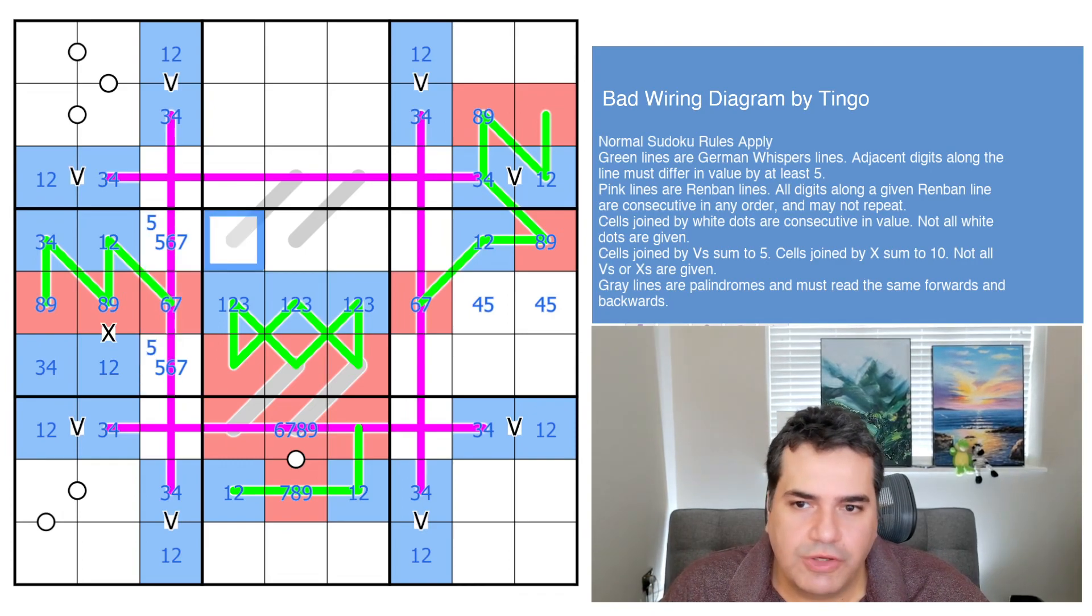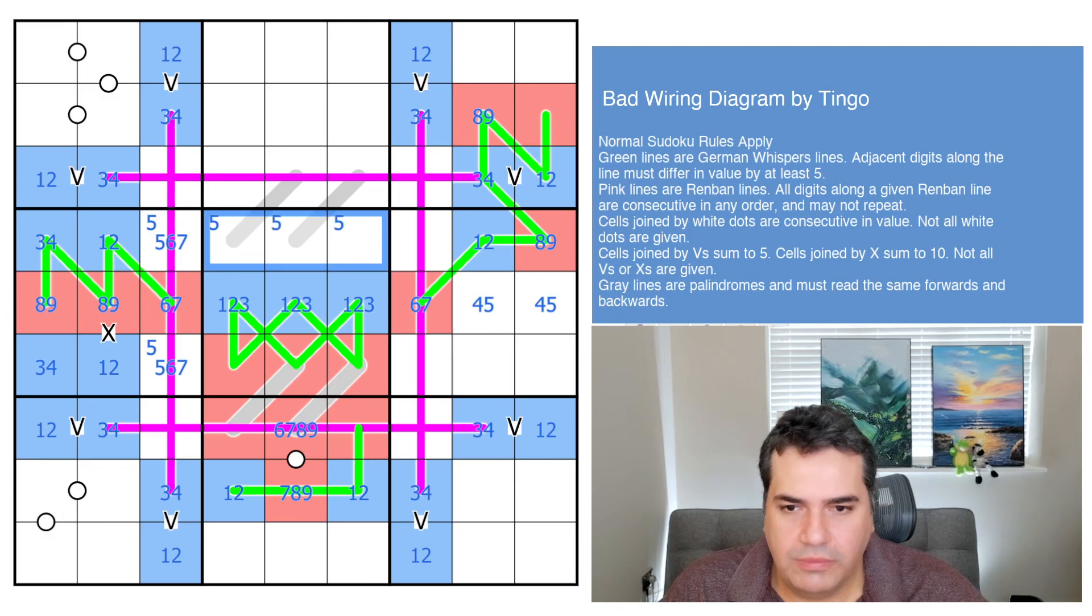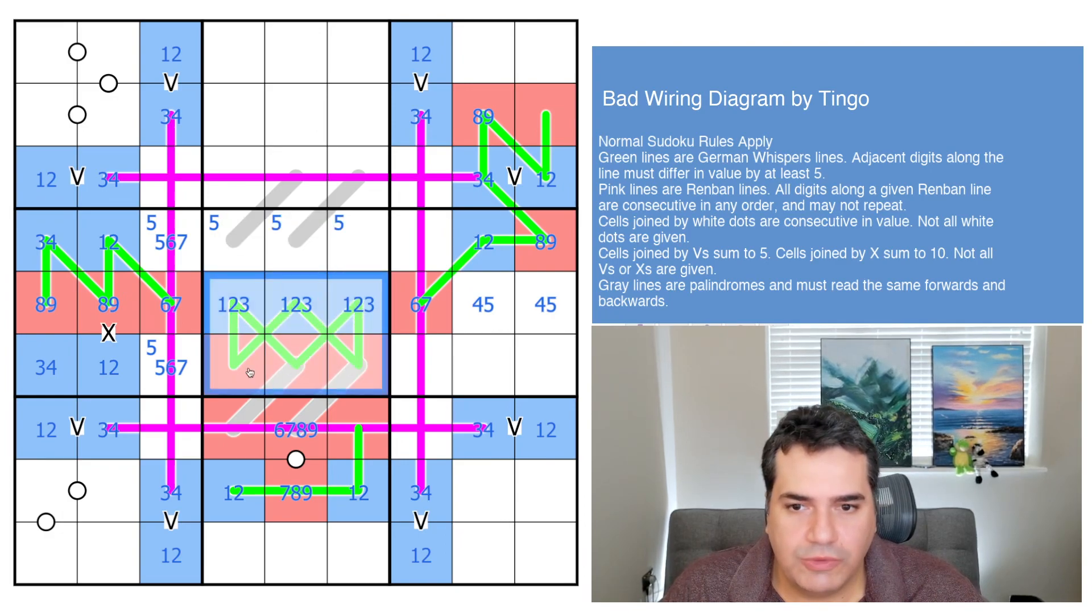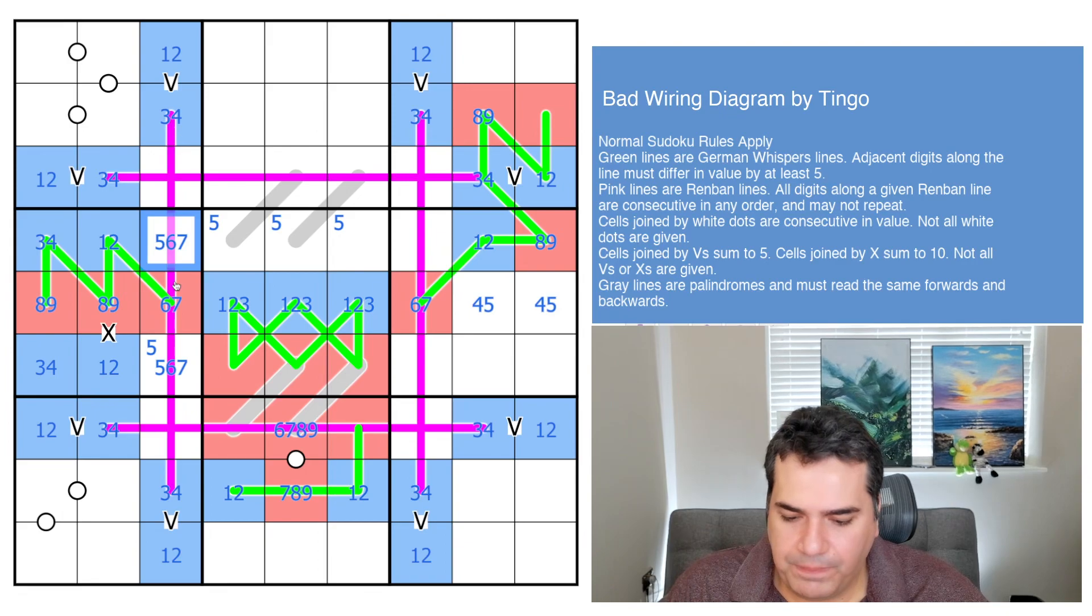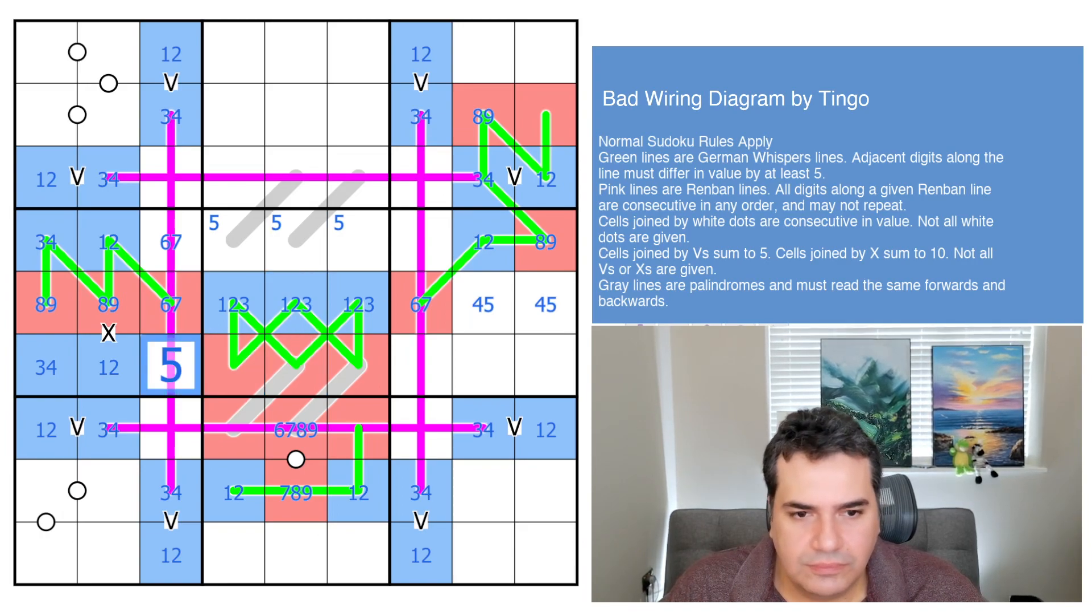Three, four cannot go in this box. So that's the remaining three, four. And now we have one of five, six, or seven. That's the five. Right. Fairly obvious. The five has to go in here, because it's not going to go in a German Whisper's line. So that's not five. That is the five. And finally, we've got our first digit five minutes into today's solve.